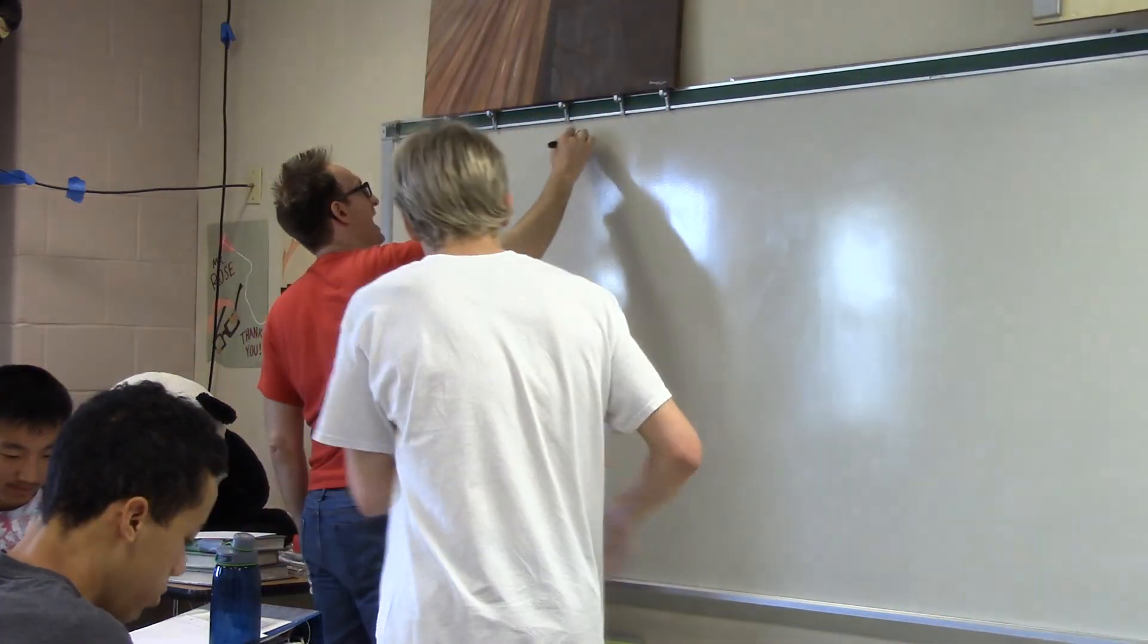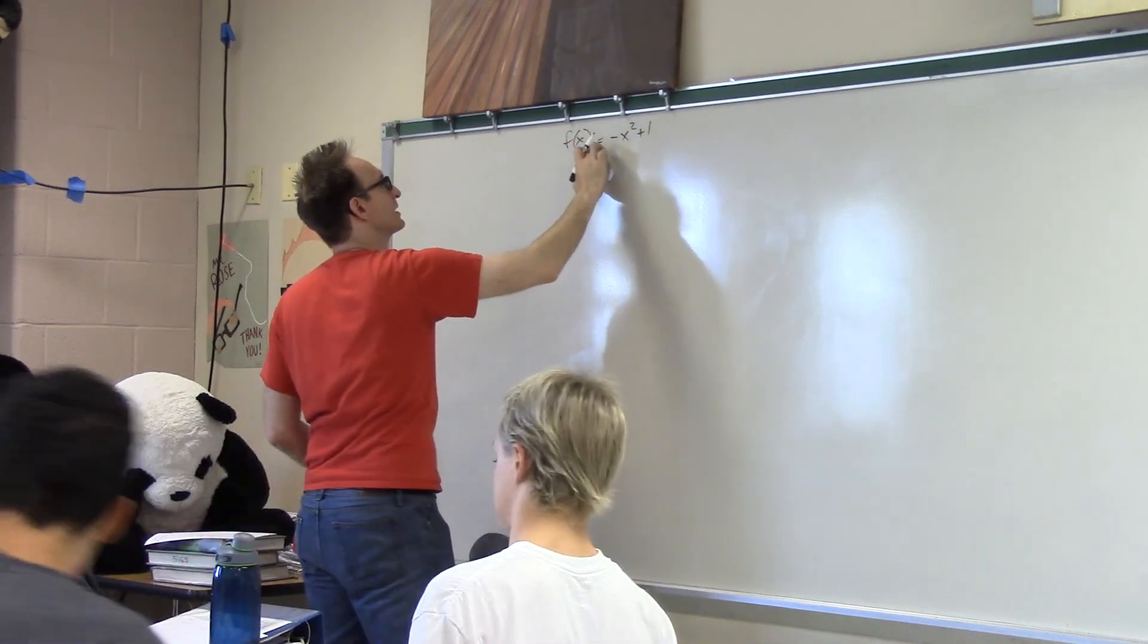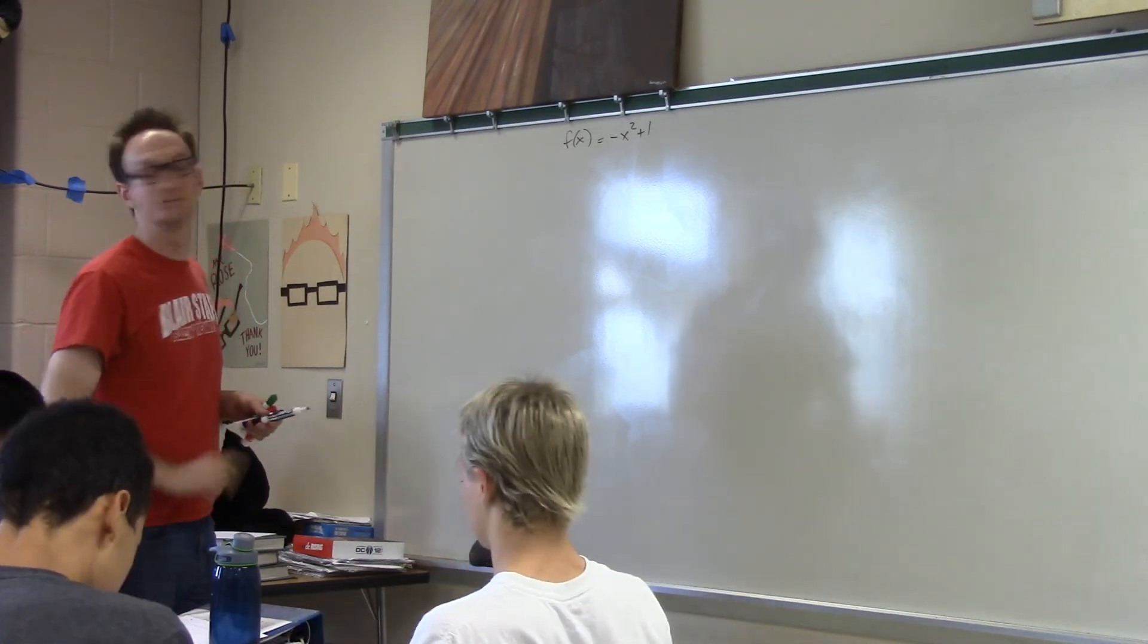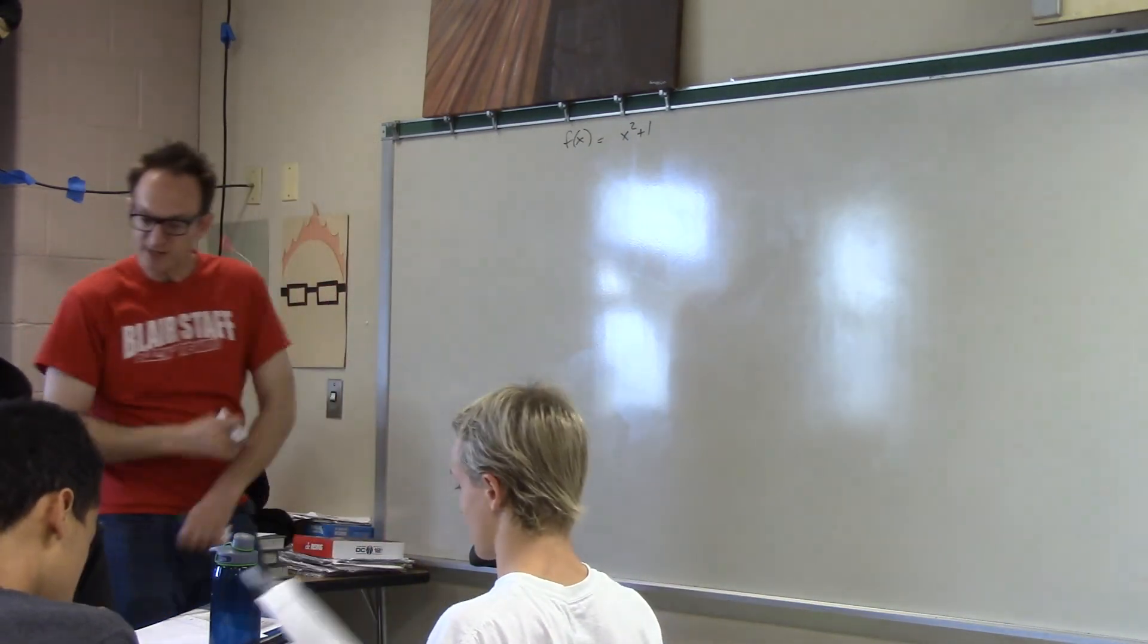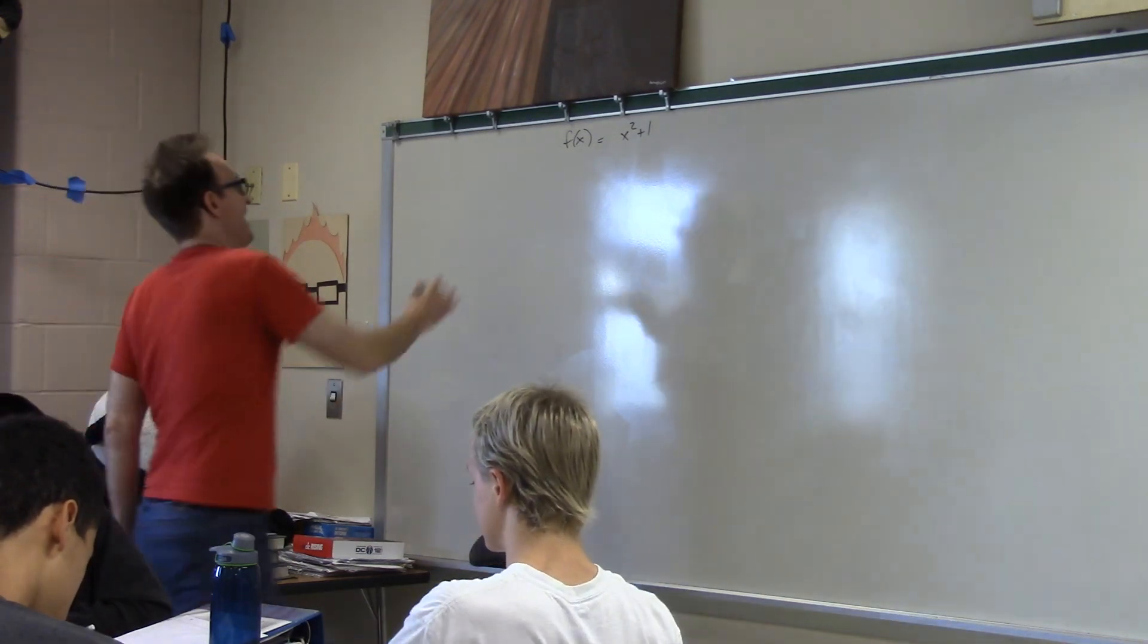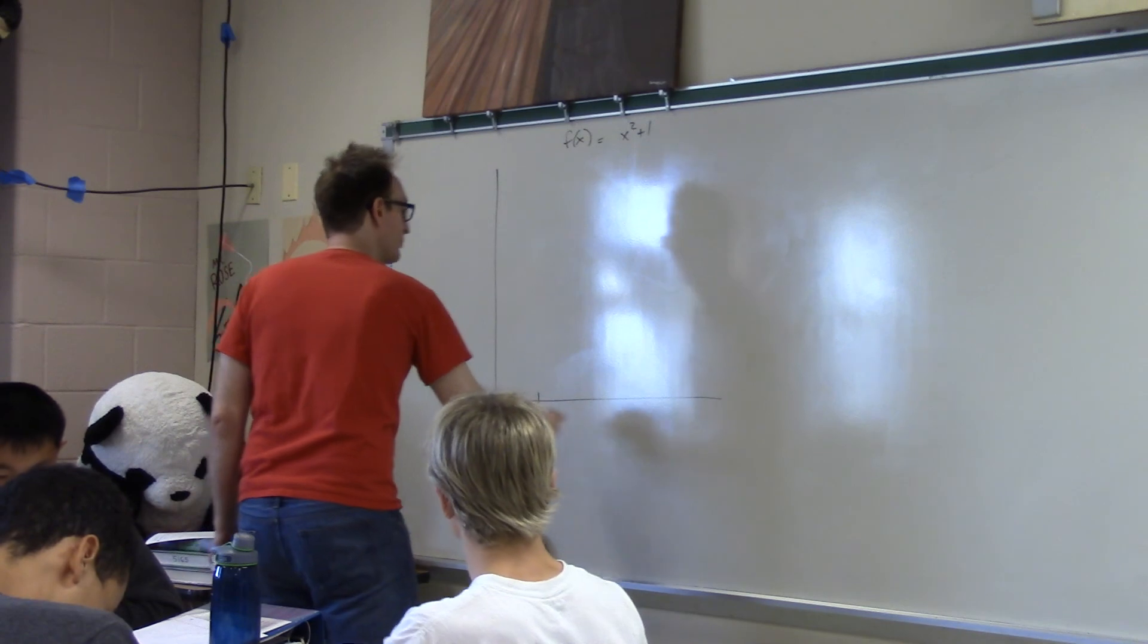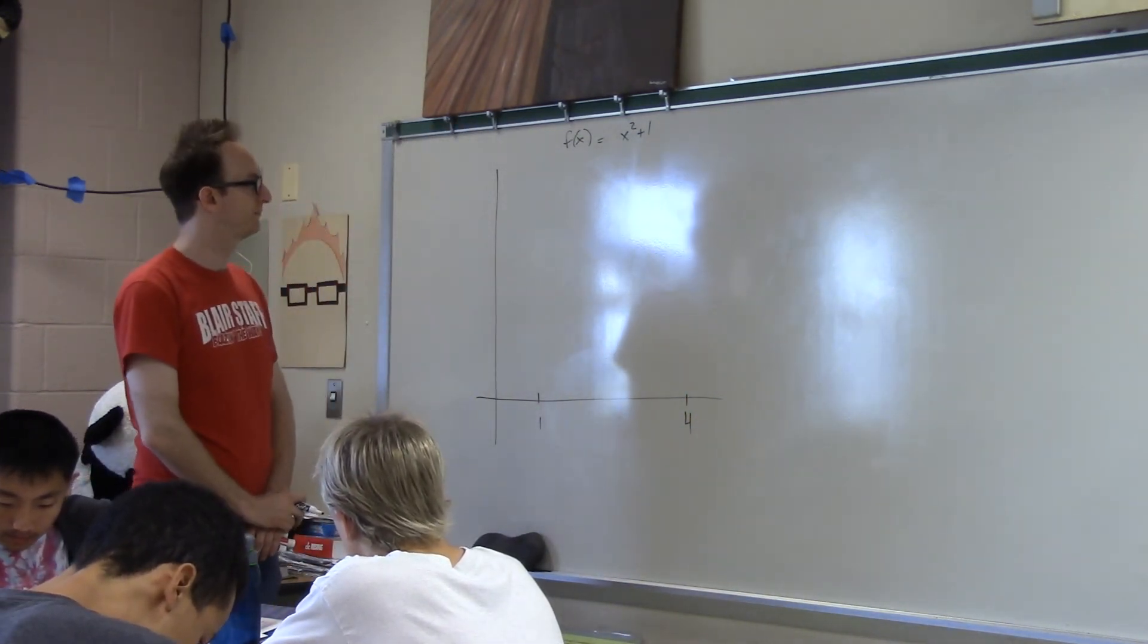We have a function, f of x equals x squared plus 1. We want to find the area under this curve from x equals 1 to x equals 4. So here's one. This is, I think, pretty, I think this is the hardest thing to get down so far as possible.